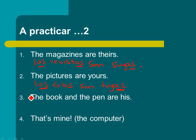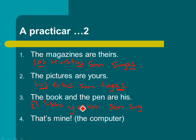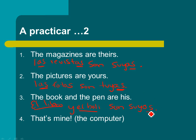The book and the pen are his — we've got two things: el libro y la pluma or el bolígrafo. It's plural because there are two objects. And both happen to be masculine, which makes it easy — so suyos. If we used la pluma instead of bolígrafo, it would still be masculine because masculine always wins out. If there's one masculine thing in the group, it's got to be masculine. Son suyos.